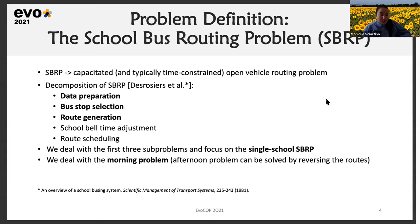This presentation will deal with the first three sub-problems, and we focus on the single school bus routing problem, where solutions are for individual schools. This is because in the locations considered, mixed loads — that is, students from different schools traveling on the same bus — are not allowed. We also deal with the morning problem, whereby students have to be transferred from their homes to the schools. A solution to the afternoon problem can be found by reversing the morning routes.